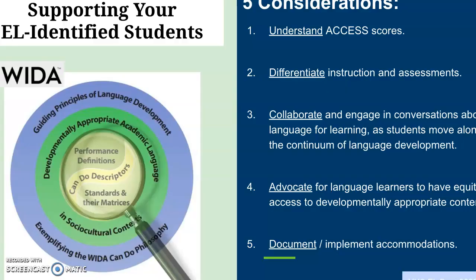Supporting your EL identified students — we want to understand the ACCESS scores and differentiate instruction based on our understanding of those scores. We want to collaborate with co-teachers, teams, and an EL specialist, and advocate for language learners to have equitable access to appropriate curriculum and content. We're also going to be talking about documenting and implementing accommodations.